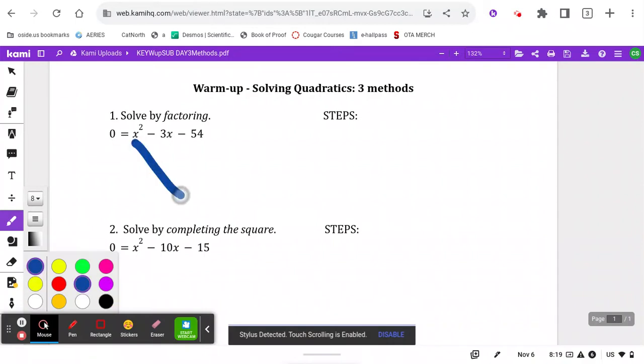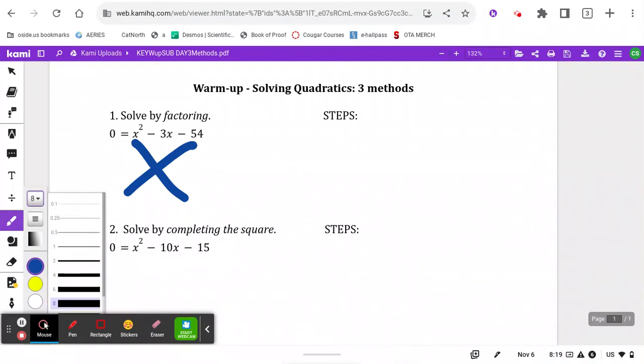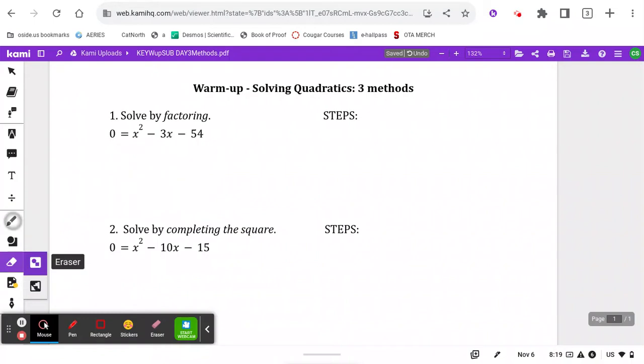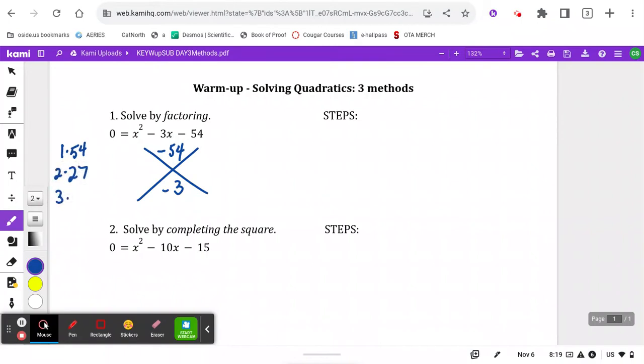The first one that we do know is solved by factoring. In this one we take a look at, is it possible to factor this quadratic? And this is usually our method of choice if so, because it usually is what we consider the easiest method. So we ask ourselves, what times what makes 54? It's a negative 54 and subtracts to give us 3. So off to the side you can make a little list: 1 times 54, 2 times 27, 3 goes in 18 times, 4 does not go in, 5 does not go in, 6 times 9 makes 54.